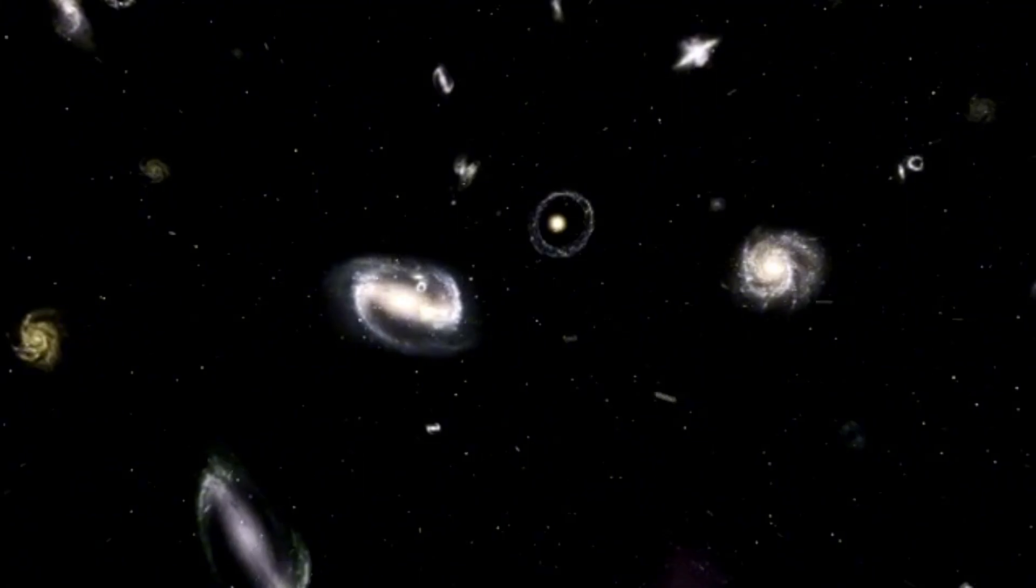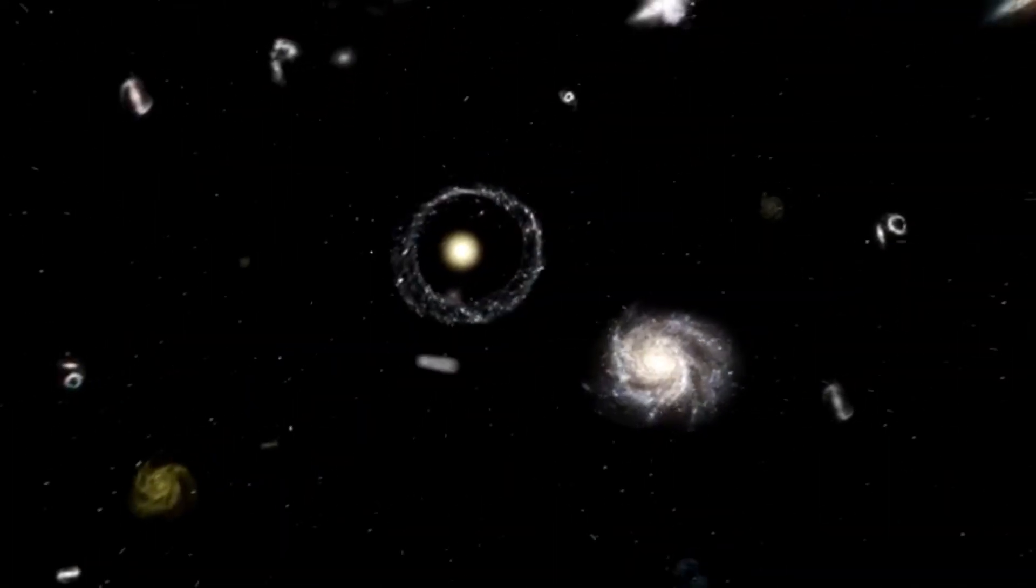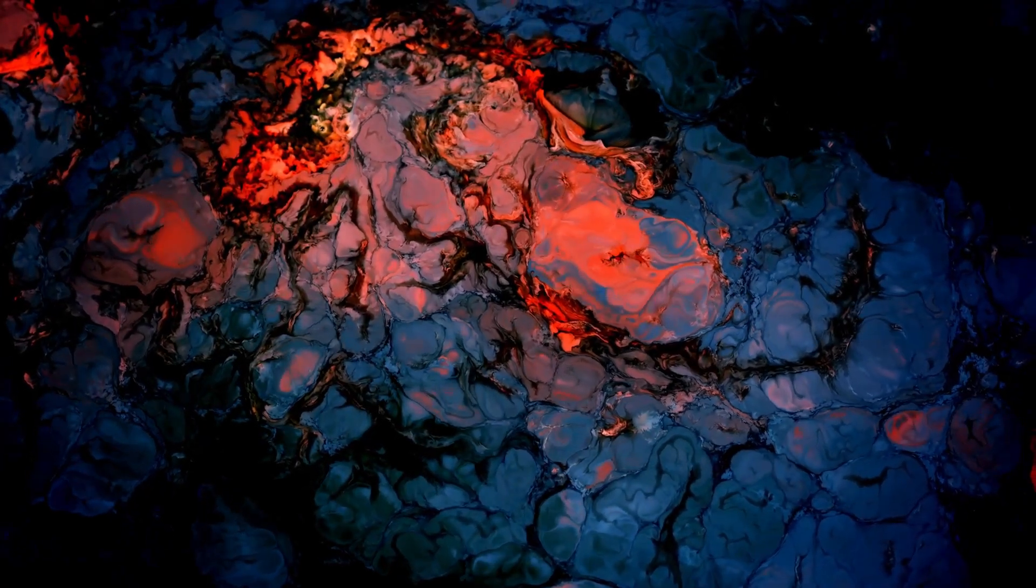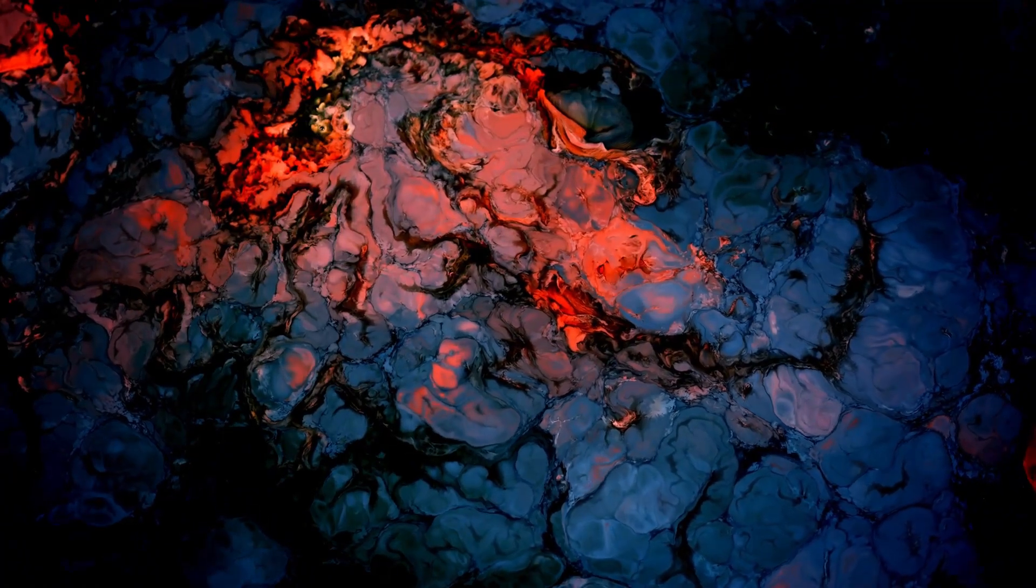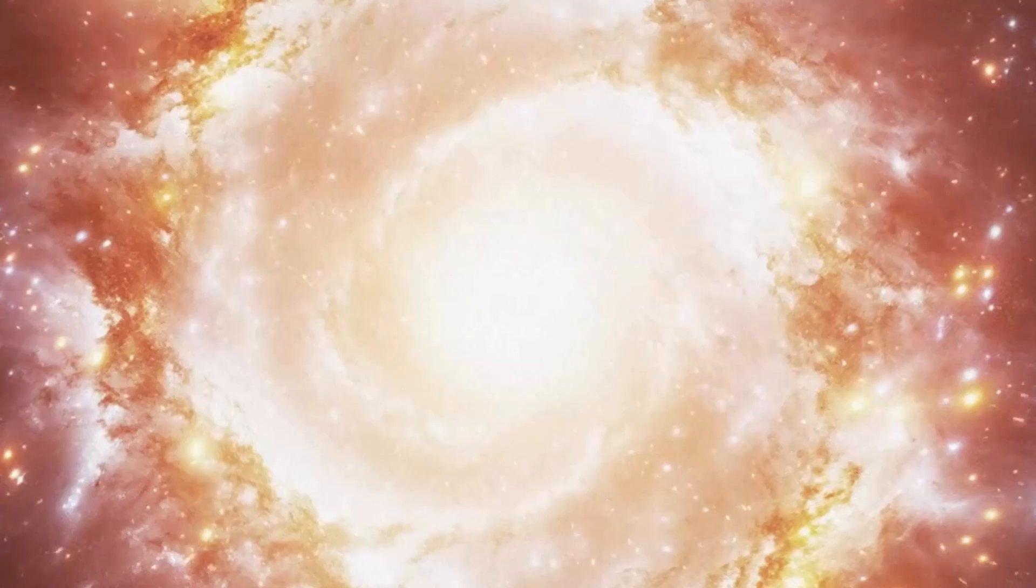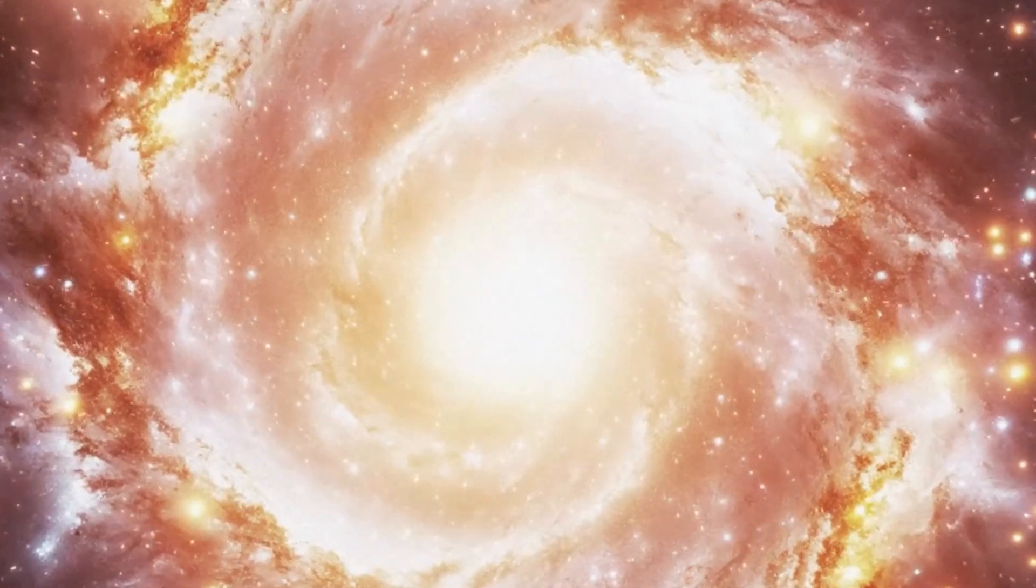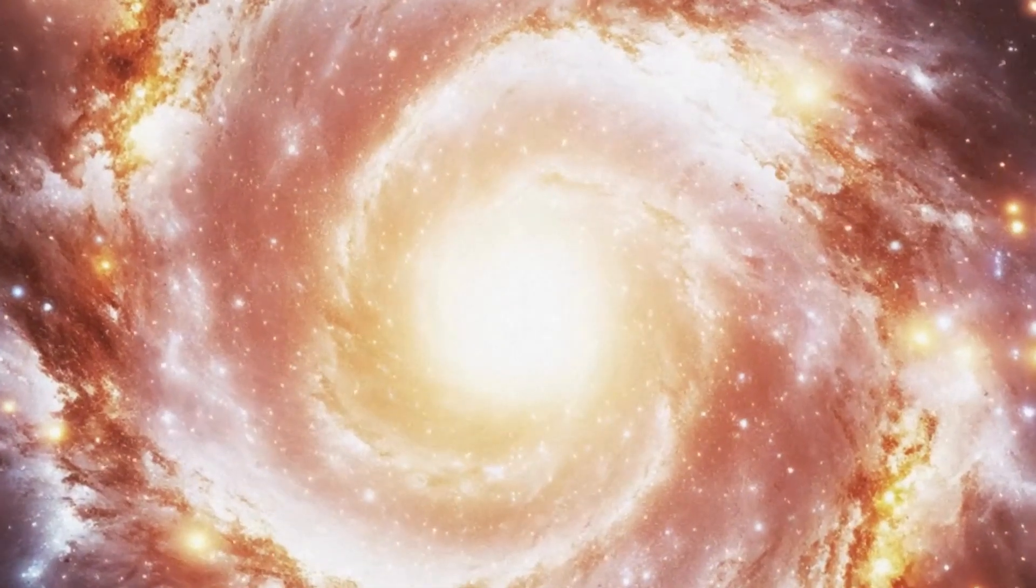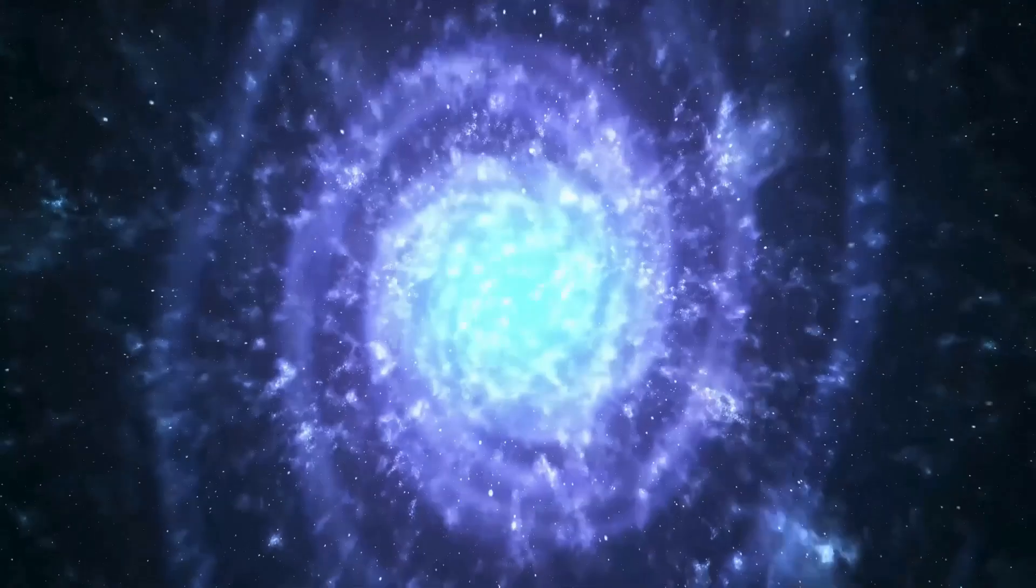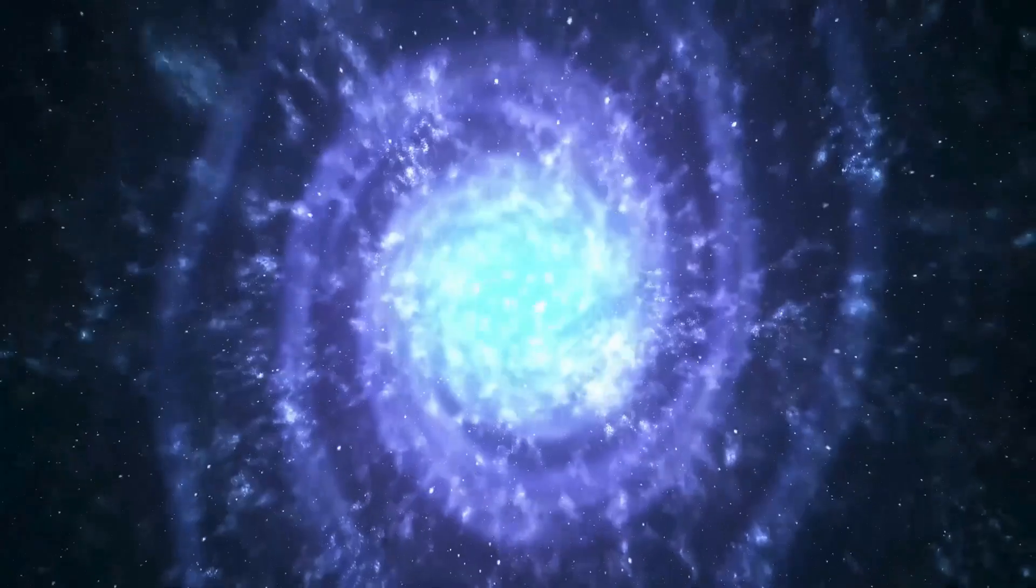The JWST has already been on the hunt. And guess what it found? Compounds called polycyclic aromatic hydrocarbons, or PAHs, lurking around those huge supermassive black holes in three active galaxies. These carbon-based molecules with ring-like structures are everywhere, from distant galaxies to comets in our solar system. They're fascinating because they could be the building blocks of life, and they help astronomers track star formation.